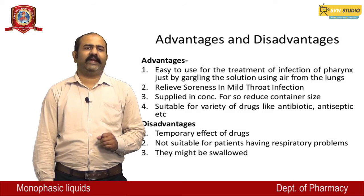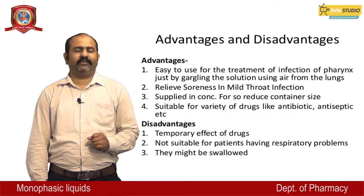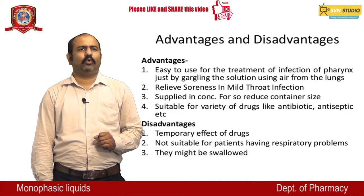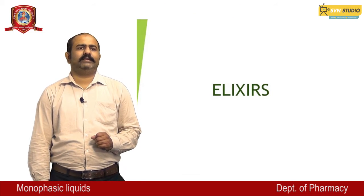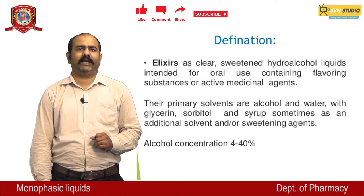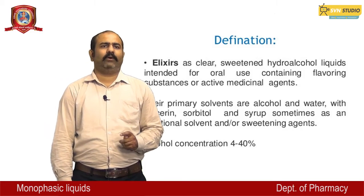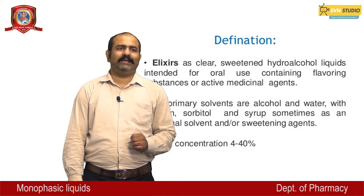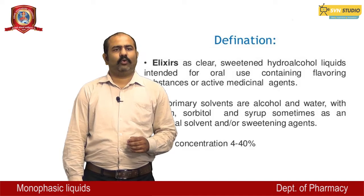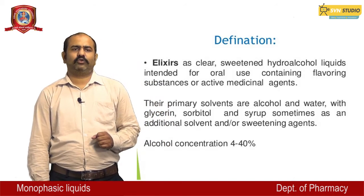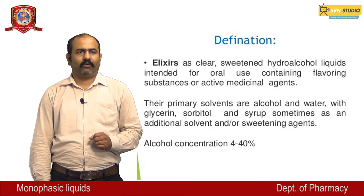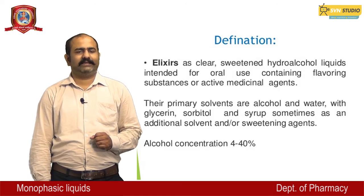Disadvantages of gurgles: temporary effect of drugs; not suitable for patients having respiratory problems; and they might be swallowed. Elixirs — definition: elixirs are clear, sweetened hydroalcoholic liquids intended for oral use, containing flavoring substances or medicinal agents. The primary solvents are alcohol and water, with glycerine, sorbitol, and syrup sometimes used as additional solvents or sweetening agents. Alcoholic concentration: 4 to 40%.